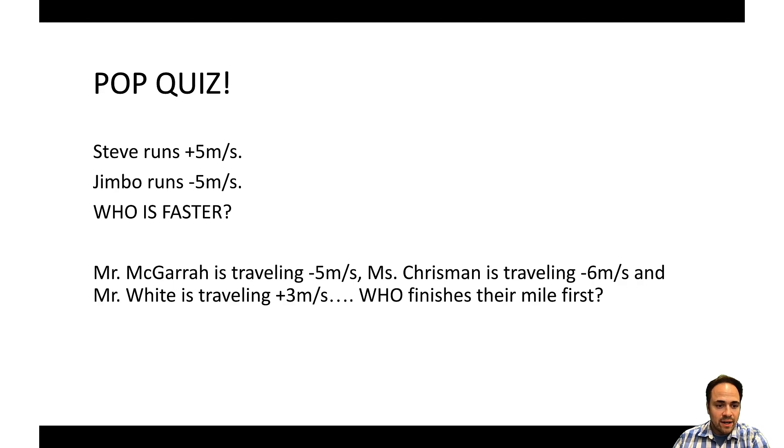So a little quiz here. If Steve runs positive five meters per second, Jimbo runs negative five meters per second, who runs faster? Well, in this case, they're both traveling at the same speed, just in different directions. So they have different velocities. Positive five meters per second means five meters per second one way. Negative five meters per second is five meters per second the other way. So same speed or magnitude component, but different directions.